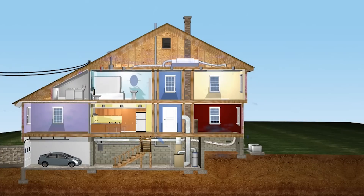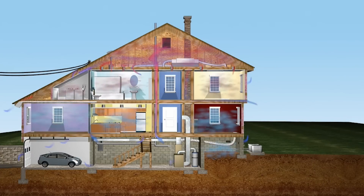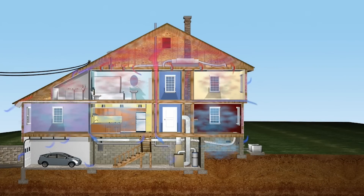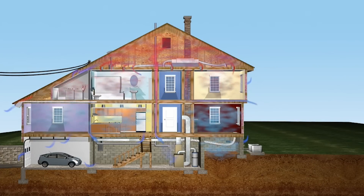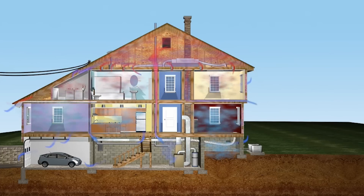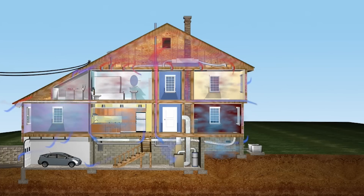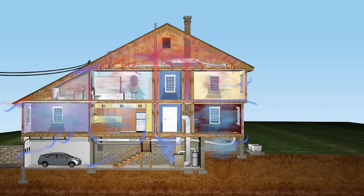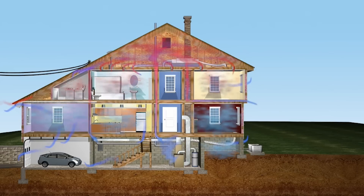We know that a house in heating season sucks air in at the bottom and air leaks out at the top, because warm air is buoyant — it rises to the top, finds all the little leaks in the top of the house and leaks out, and that creates a suction at the bottom of the house to draw in new unconditioned air.